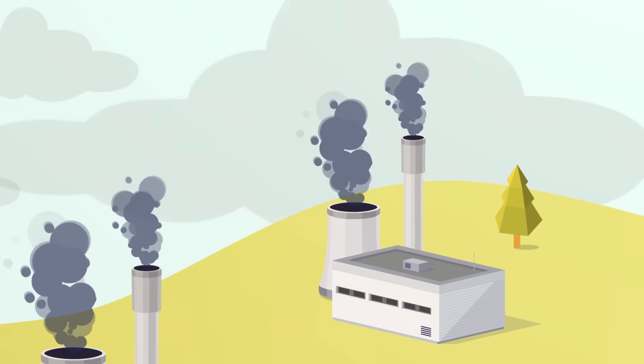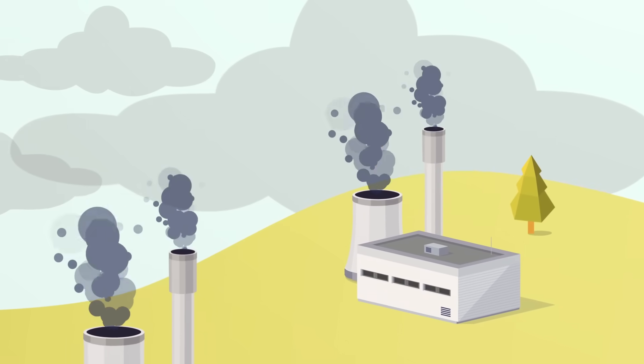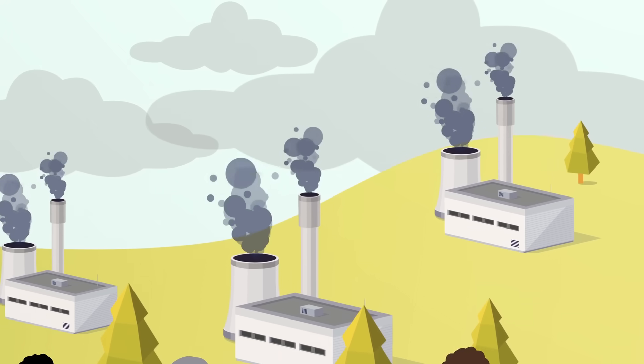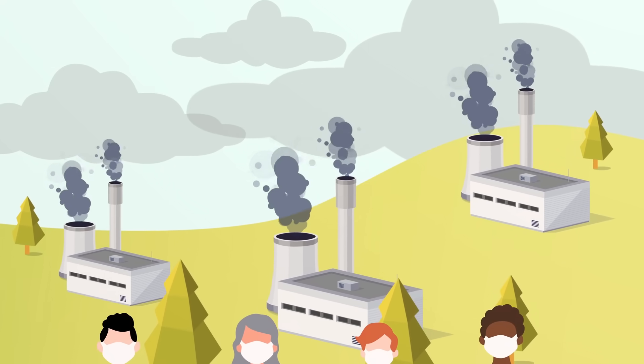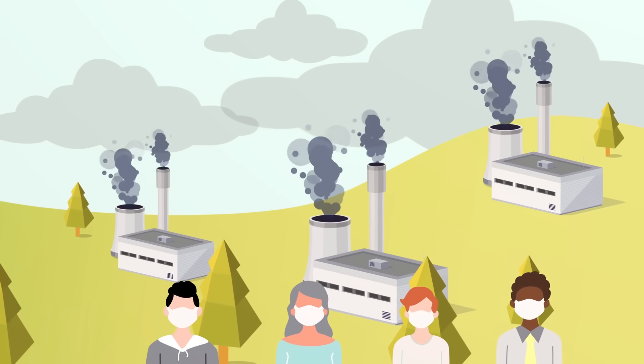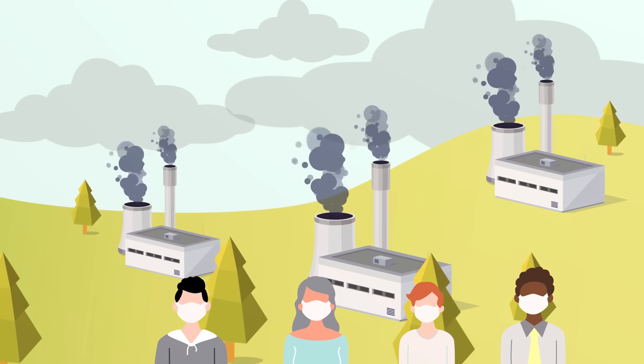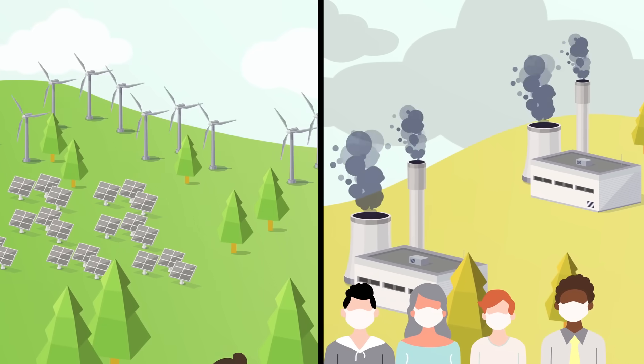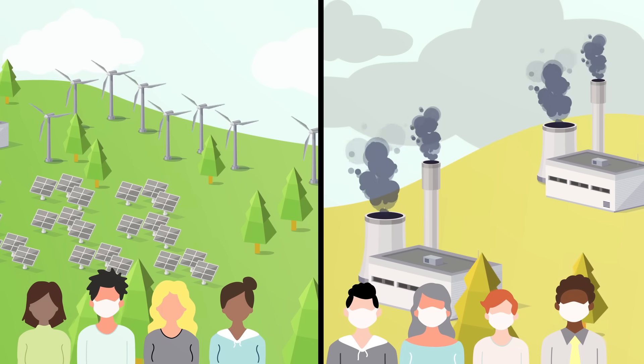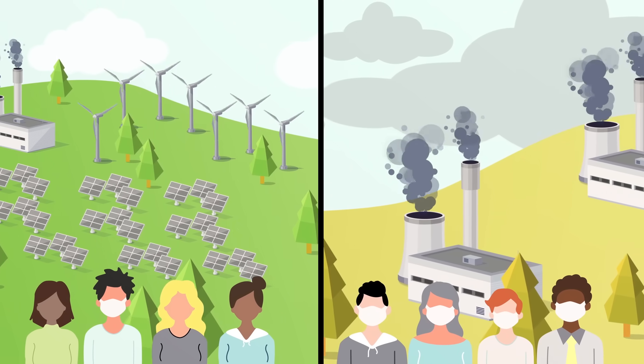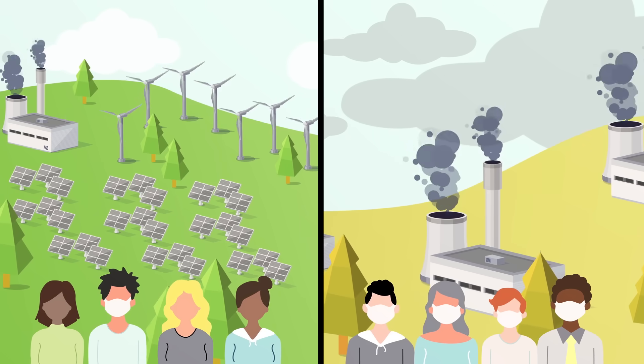Yet many other places around the world have barely begun shutting down polluting plants, leaving communities exposed to harmful emissions that cause asthma, cancer, and more. Building clean energy there can reduce up to five times more emissions than in other places, fighting climate change five times faster, and saving up to 13 times more lives. This is a triple win for climate, communities, and conservation.